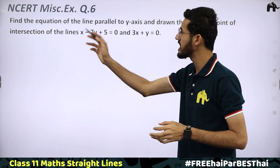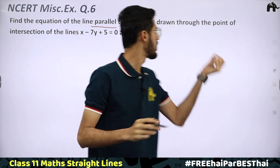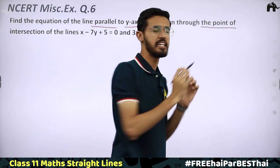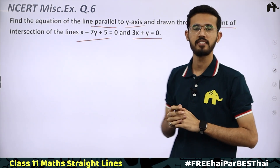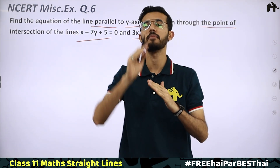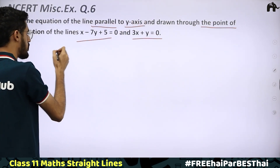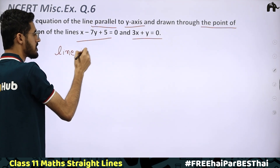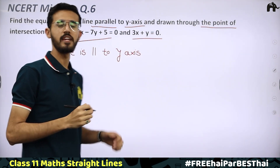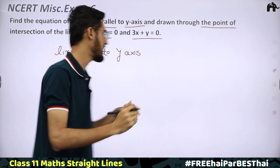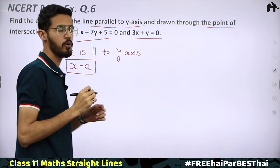Question No. 6: Find the equation of the line parallel to the Y-axis, drawn through the point of intersection of the lines x − 7y + 5 = 0 and 3x + y = 0. Our line is passing through the intersection of these two lines and is parallel to the Y-axis. If a line is parallel to the Y-axis, its equation is x = a.